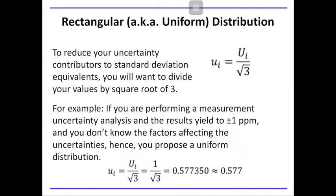In order to reduce uncertainty contributors to the standard deviation equivalence, the value of the standard deviation shall be divided by the square root of 3. For example, when performing a measurement uncertainty analysis and the result yields plus or minus 1 ppm and we don't know the factors affecting the uncertainties, we propose a uniform or rectangular distribution. The standard deviation of the measurement is plus or minus 1 ppm, and therefore the uncertainty of the measurement is standard deviation divided by square root of 3 — that is, 1 divided by square root of 3 equals 0.577 ppm.